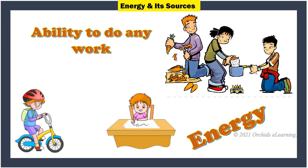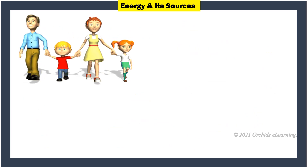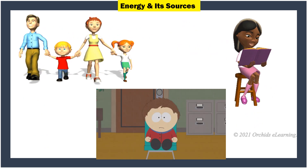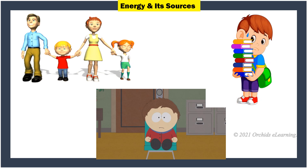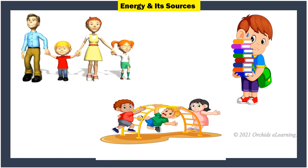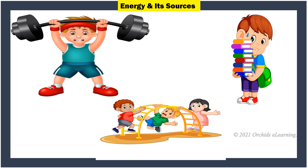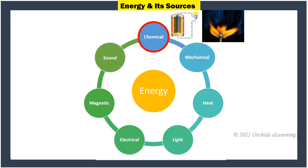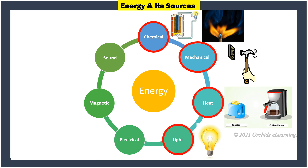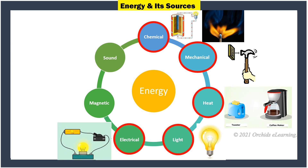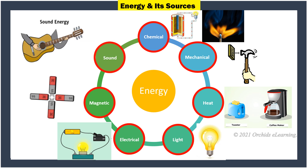Energy and its sources: Energy is the ability to do work. We need energy to do everything, from basic activities such as walking, reading, and talking, to difficult tasks such as lifting, carrying, and climbing. Energy exists in various forms such as chemical, mechanical, heat, light, electrical, magnetic, and sound. Energy can change from one form to another.